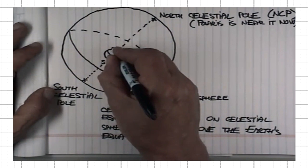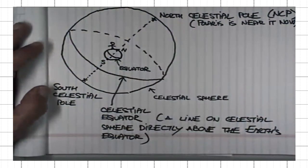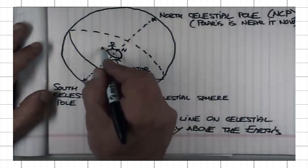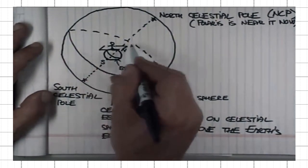Then for an observer that is at mid-latitudes north, like us, say here, this would be the observer's horizon.